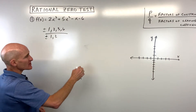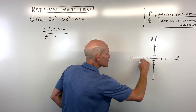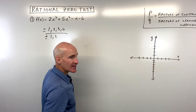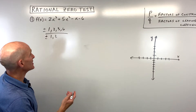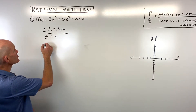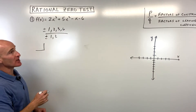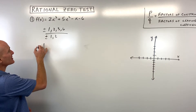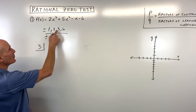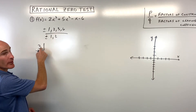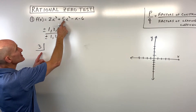When we talk about the zeros, these are the x-intercepts — it's where it crosses the x-axis. The way we check to see if they're actually zeros or not is we do synthetic division. So let's test, for example, three over 1, which is 3.